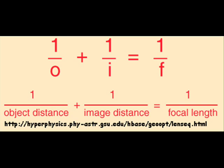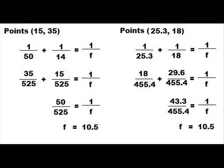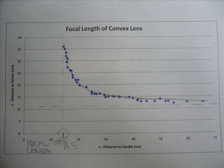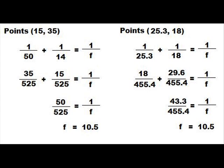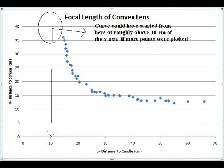We used the thin lens equation to find the focal length. The average focal length calculated was about 10.5. We compared the focal length obtained from the graph and the focal length from our calculations. The focal length from our calculations came out smaller than the focal length of our graph. This tells us that perhaps we didn't plot enough points and that the curve could have started at an earlier point, which would have given us a more accurate focal length from the graph.